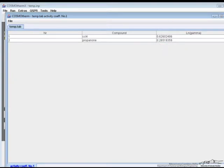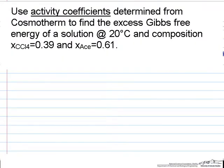So if we just write the equation for excess Gibbs free energy, gE over RT is equal to xi ln of gamma i plus xj ln gamma j.